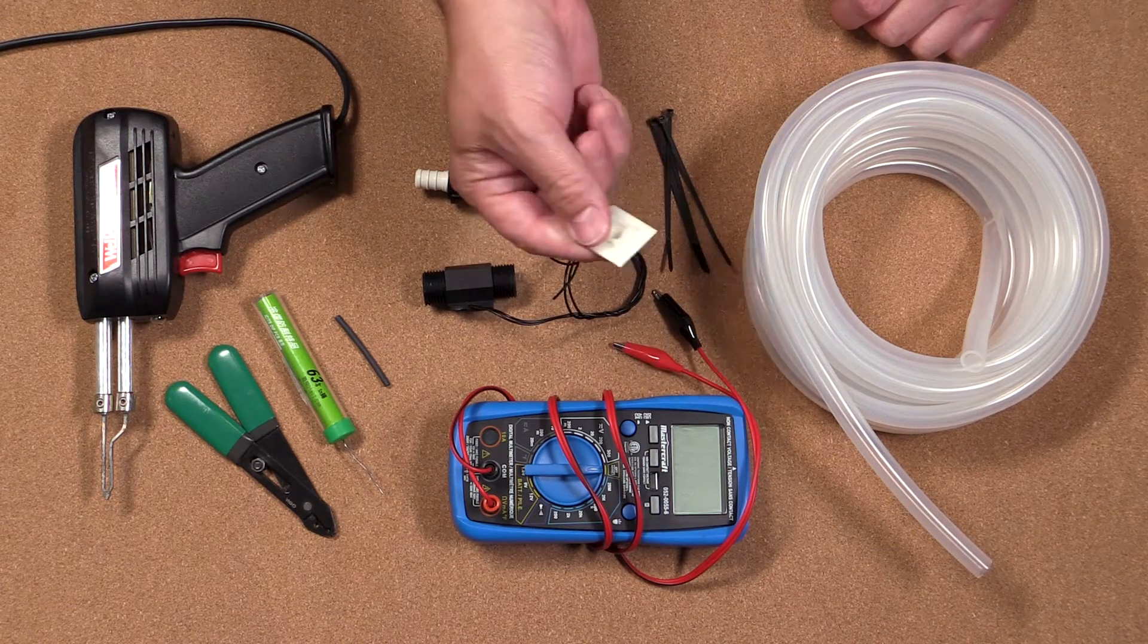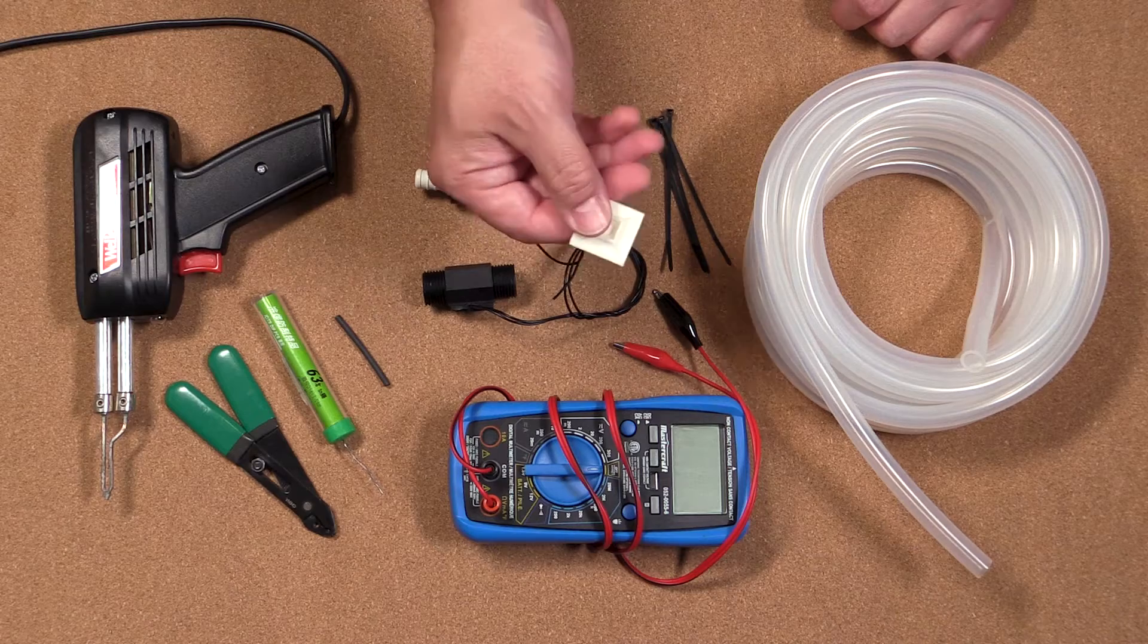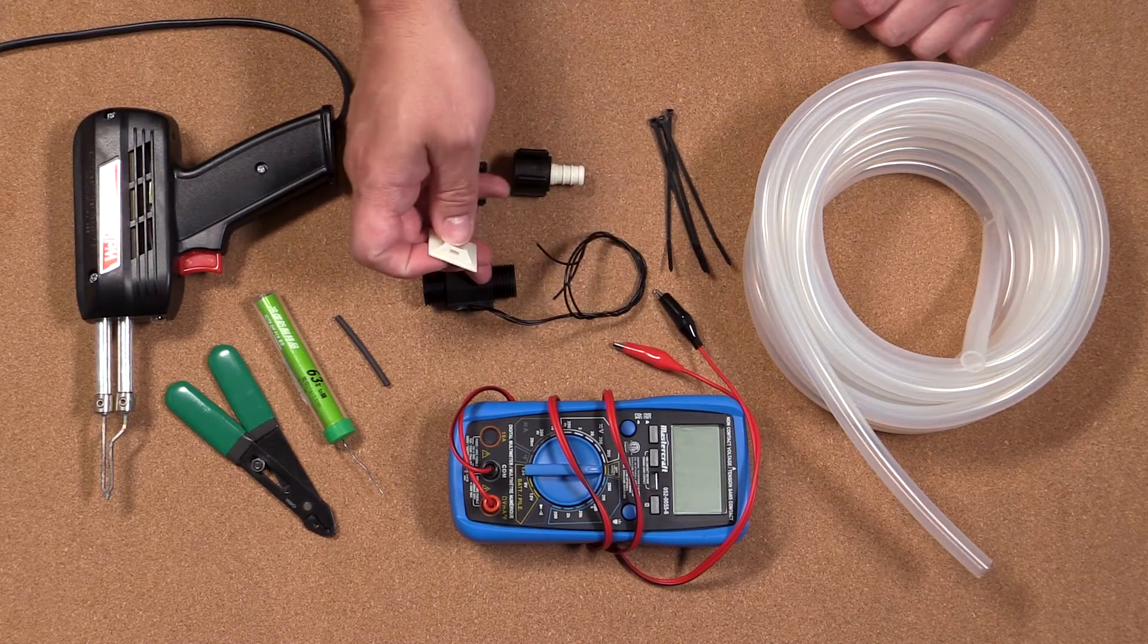I also have this little anchor mount here with a sticky back and I'll be using this to secure the water flow switch to the machine frame.